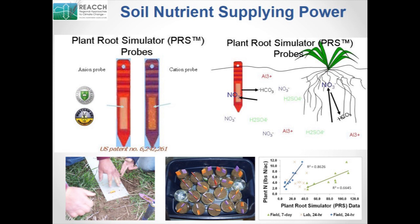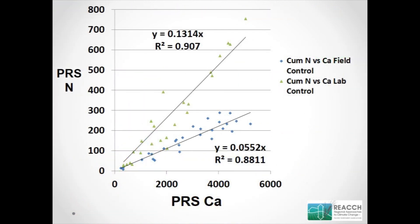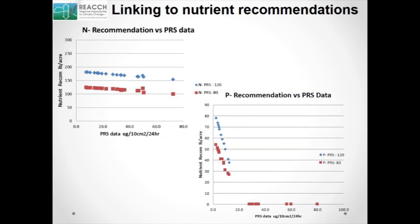Another way we're assessing things to link it back to farmers is evaluating the soil nutrient supplying power. At the same sites, we're applying anion and cation exchange probes that we can insert into the soil or into a laboratory setup. They accumulate all the macro and micronutrients from the soil solution, and we can start to look at what active carbon is giving us. And here's recommendations for fertilizer based on those ion exchange membranes.